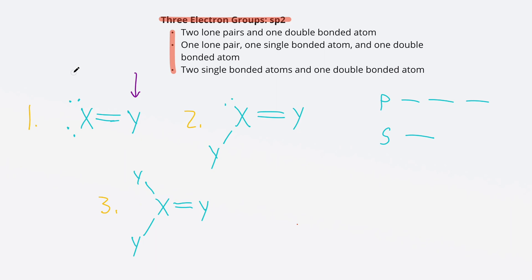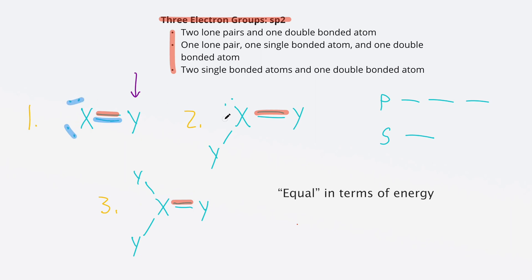Let's look at why something with three electron groups becomes sp2 hybridized. Notice that in each example there is a double bond — that's necessary whenever you have only three electron groups while obeying the octet rule, because you need a double bond for the central atom to have eight electrons. Our observation is that one of the double bond's electrons — highlighted in blue — are equal in energy to the other electrons bonded to the central atom, whether those are lone pairs or single bonds.